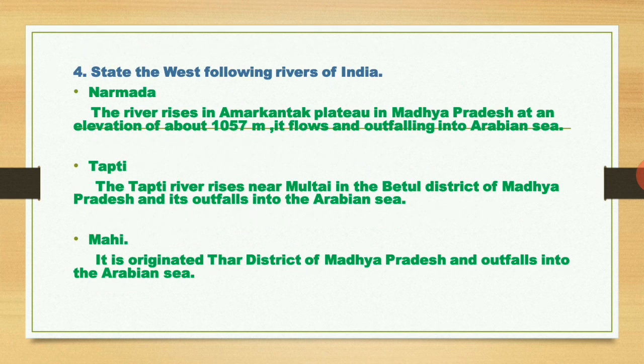Next question: state the west-flowing rivers of India. There are three west-flowing rivers of India: Narmada, Tapti, and Mahi. The Narmada river rises in the Amarkantak Plateau in Madhya Pradesh at an elevation of about 1057 meters and flows out into the Arabian Sea. The Tapti river rises near Betul in the Betul district of Madhya Pradesh and also falls into the Arabian Sea.